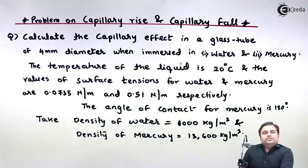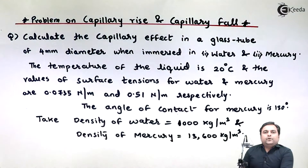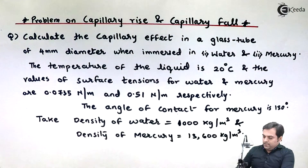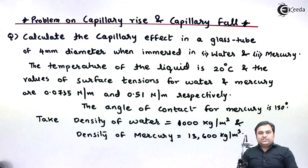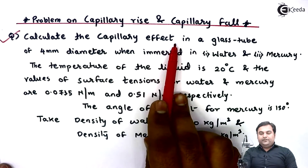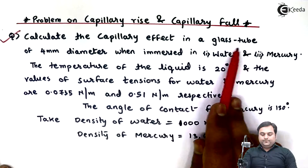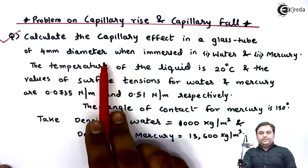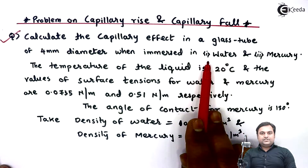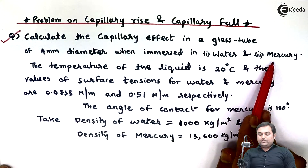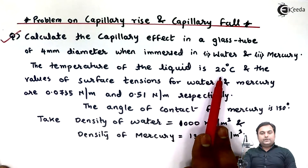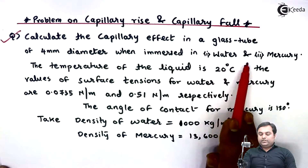Hello friends, here we will see a problem based on capillary rise and capillary fall. We have a question: calculate the capillary effect in a glass tube of 4 mm diameter when immersed in water — that is the first condition — and mercury, the second condition. The temperature of the liquid is 20 degrees Celsius for both water and mercury.